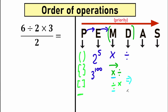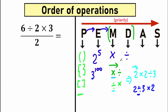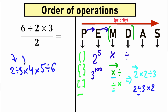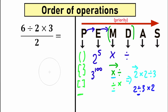For example, when we have 2 times 2 divided by 3, we multiply first because multiplication is the first sign from left to right. But when we have 2 divided by 3 times 2, the first sign is division, so we divide first. Multiplication and division have the same priority — we just scan what is the first sign from left to right. For a long expression like 2 divided by 3 times 4 times 5 divided by 6, we go step by step from left to right.